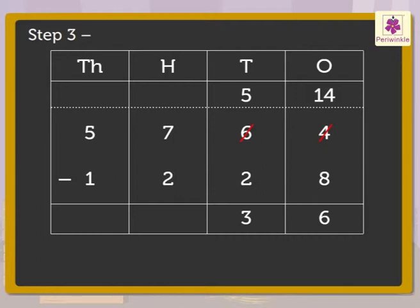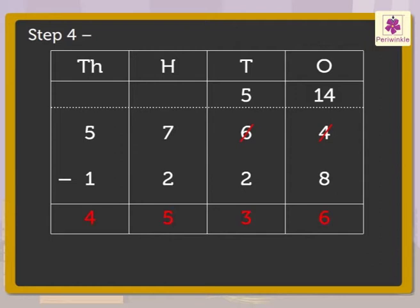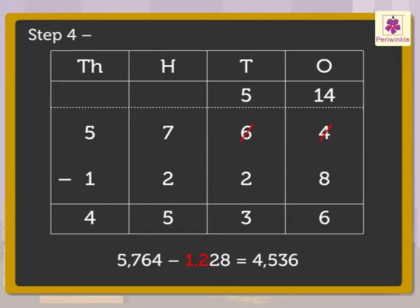Step 3: Subtract the hundreds. That is, seven minus two is equal to five. Step 4: Subtract the thousands. That is, five minus one is equal to four. Yippee! We got the answer, four thousand five hundred thirty-six. Five thousand seven hundred sixty-four minus one thousand two hundred twenty-eight is equal to four thousand five hundred thirty-six.